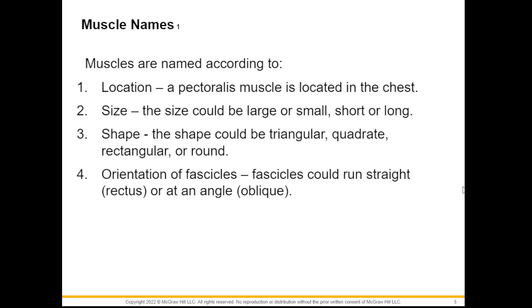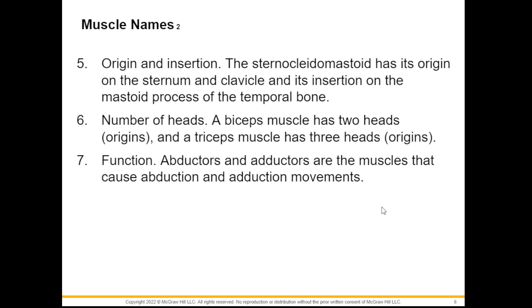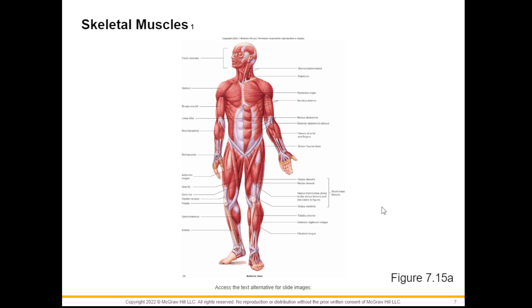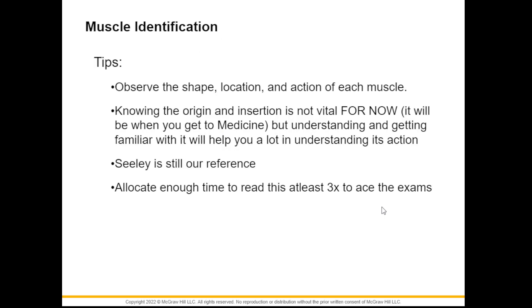Muscles are named depending on their location, size, shape, and orientation. By knowing the meaning of the names of the muscles, it would give you a big clue as to its function, where you will find it, and what the appearance of the muscle is. Muscles can also be named according to their origin and insertion, according to the number of heads the muscle has, and according to their function. For now, observe the shape, location, and action of each muscle.